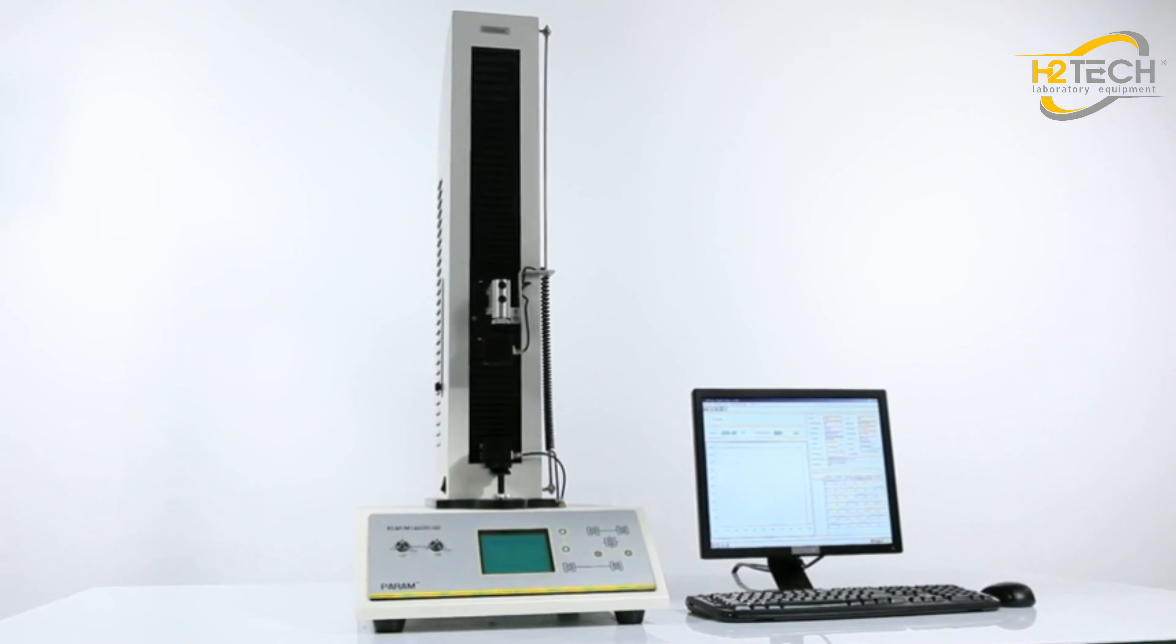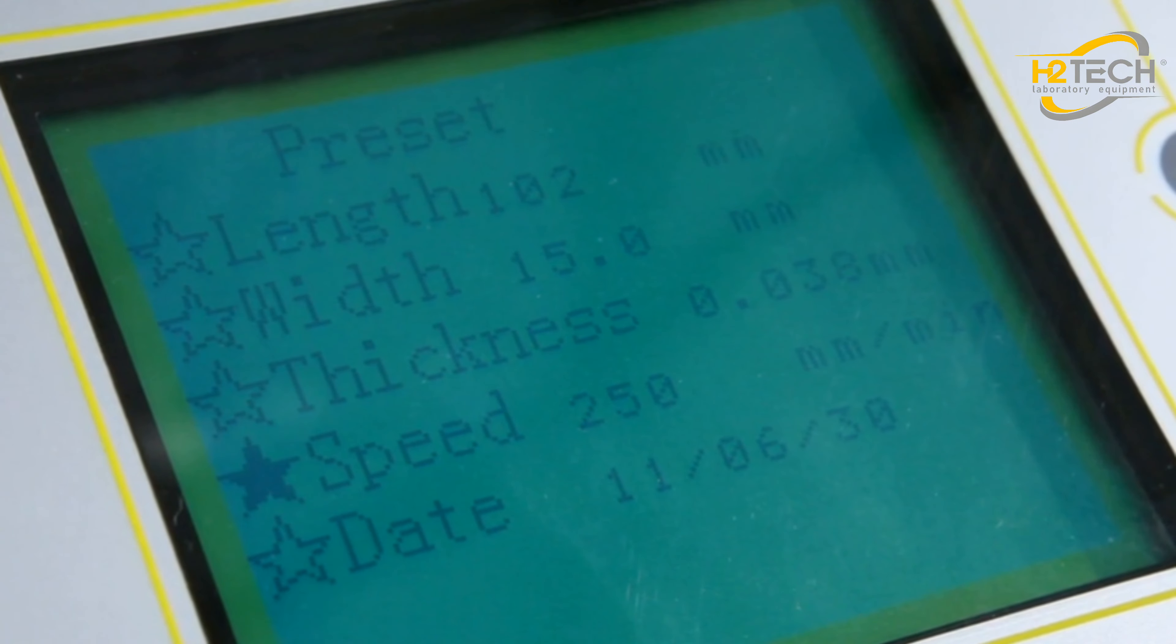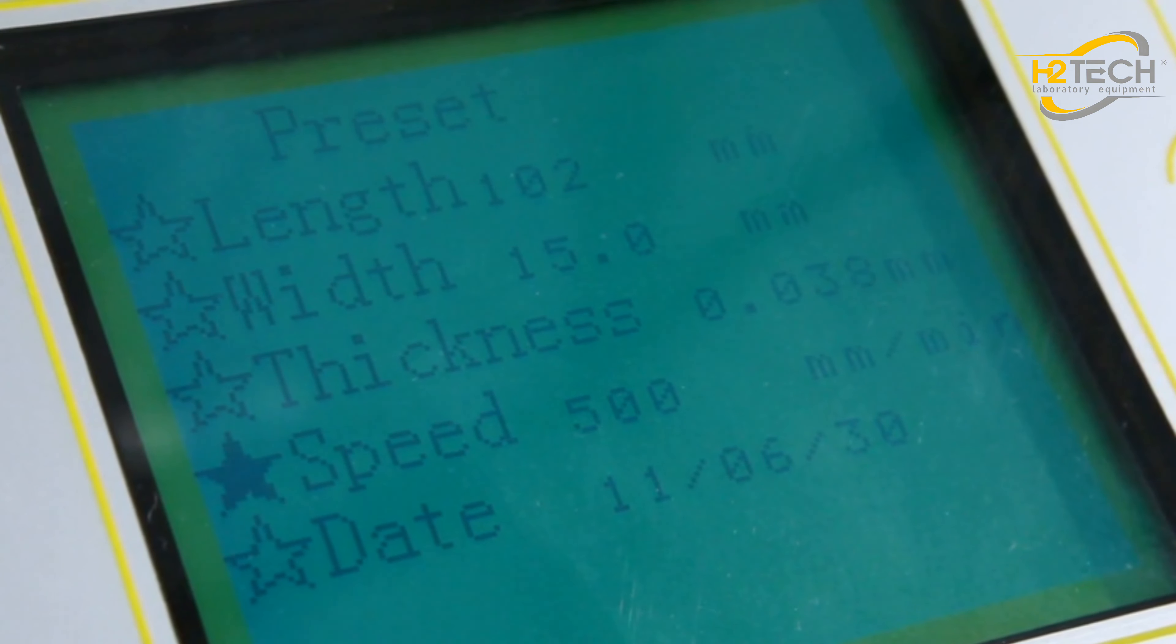XLWM is LabThink's basic automatic tensile tester. The instrument can perform tests at seven different testing speeds to meet different industry standards.